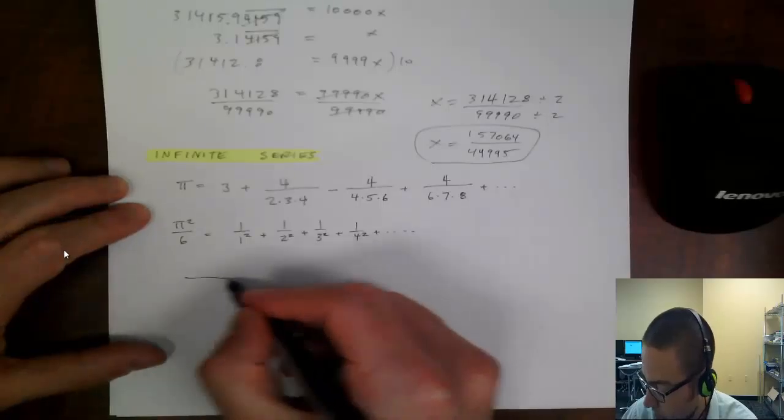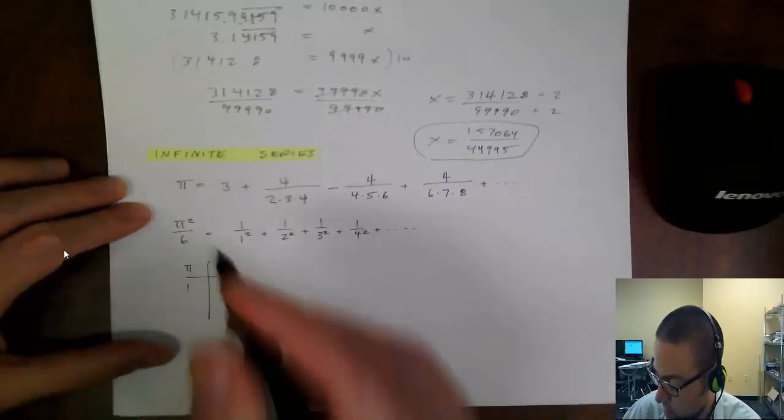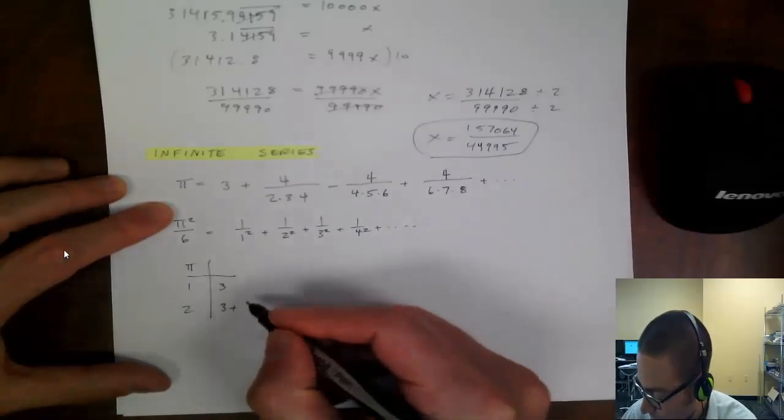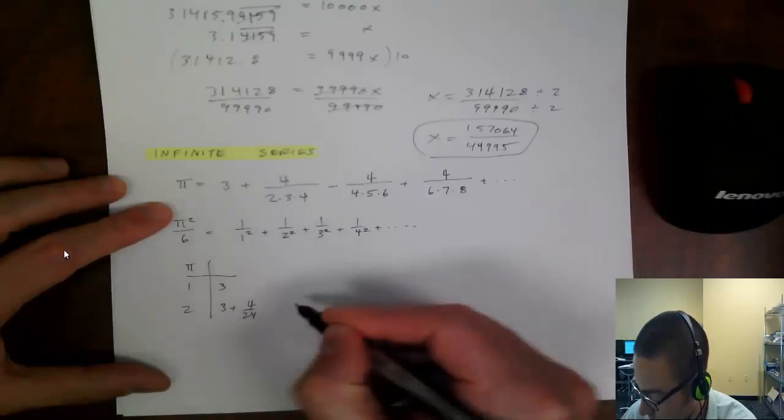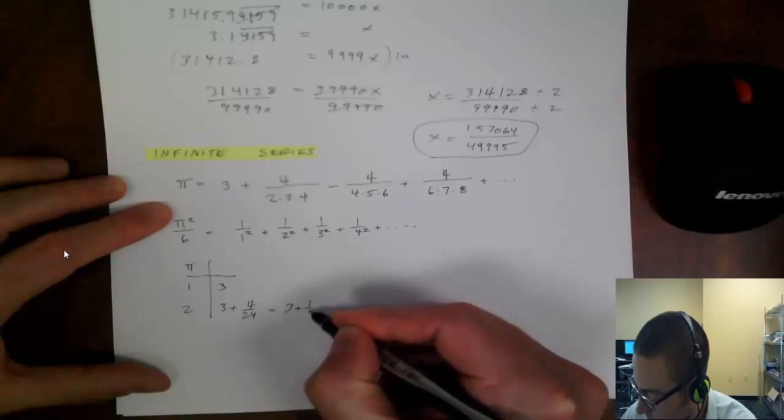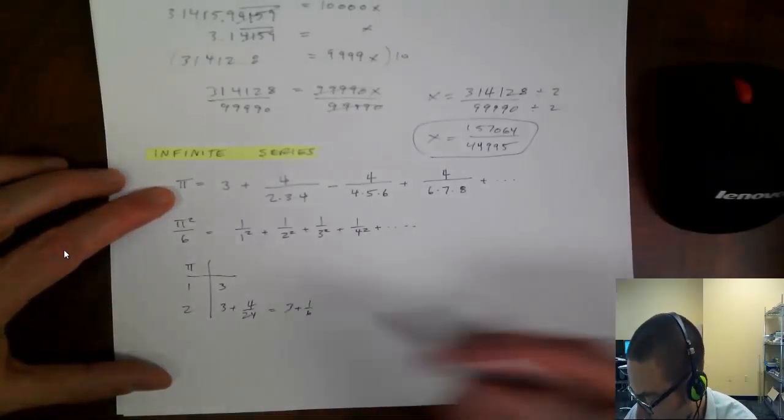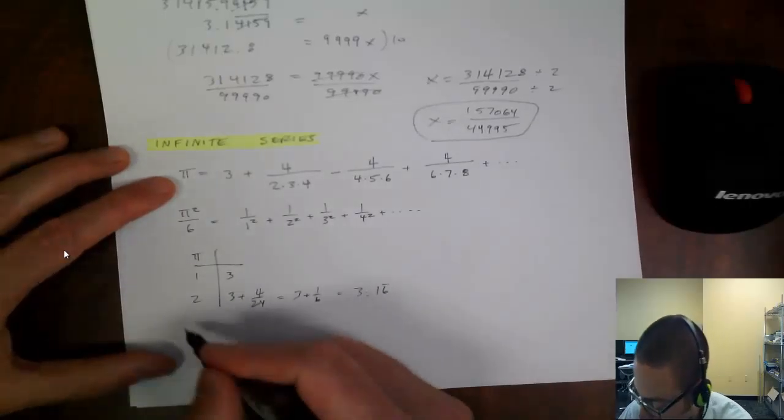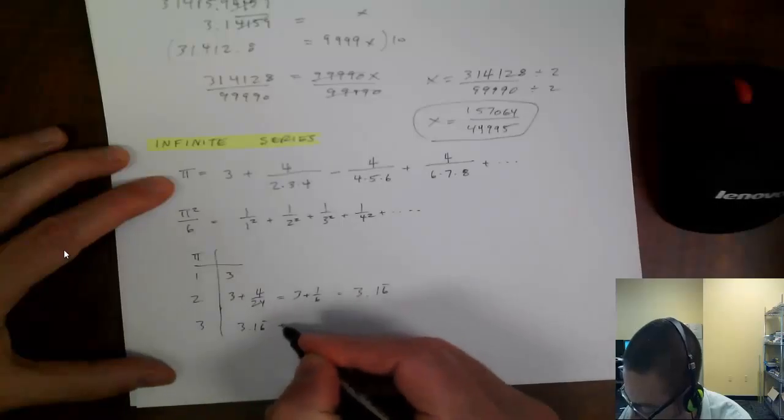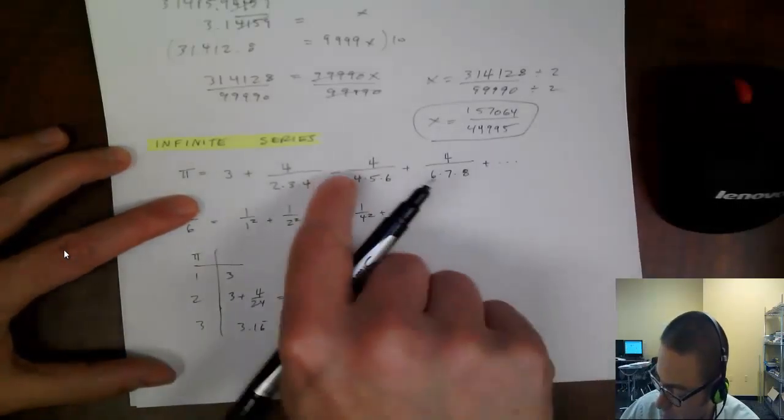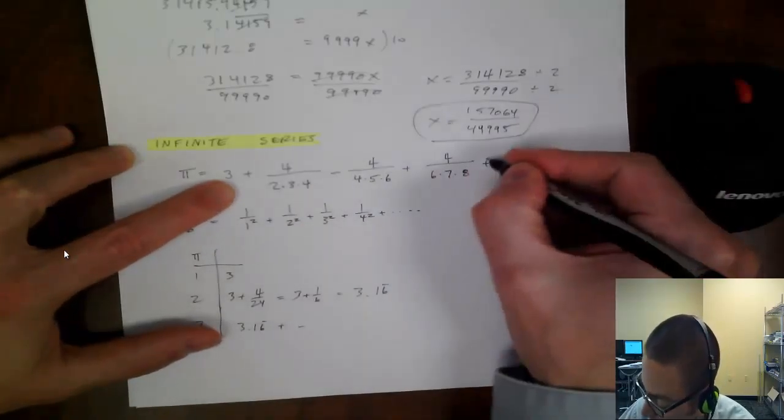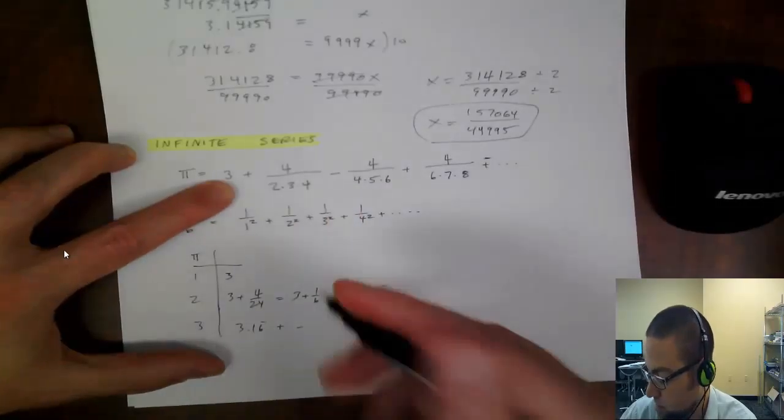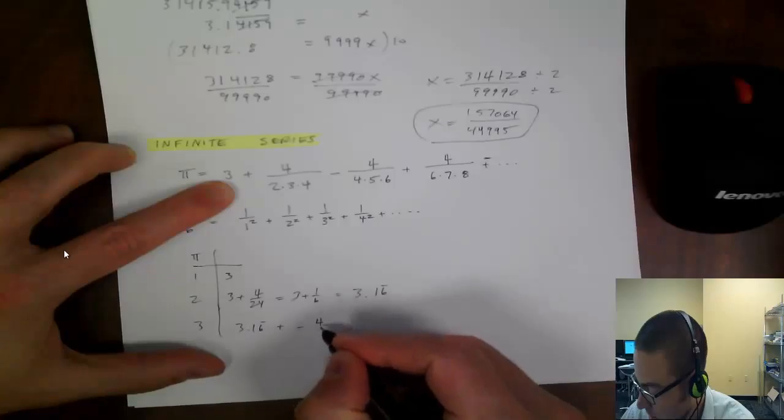So 3, so the first term, so the first term of this approximation would just be 3. The second term of the approximation would be 3 plus 4 24ths, which is 1 6th, isn't it? 3 plus 1 6th, which is 3 1 6th, or I know as a decimal would be 3.16 repeating. So that's pretty close already, you see. And then the third term would be that 3.16 repeating plus, or no, minus. So the signs start alternating. It's plus, it's minus, plus, minus. It doesn't mean minus here. And then it repeats back and forth. So I'm gonna take away 4 over 5, 4 times 5 times 6. So 20 times 6, 20 times 6 is 120.